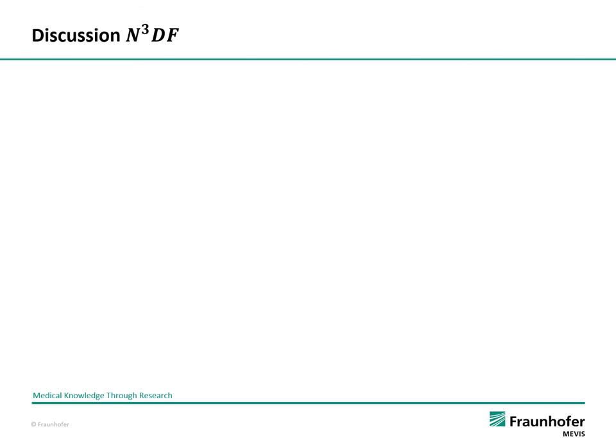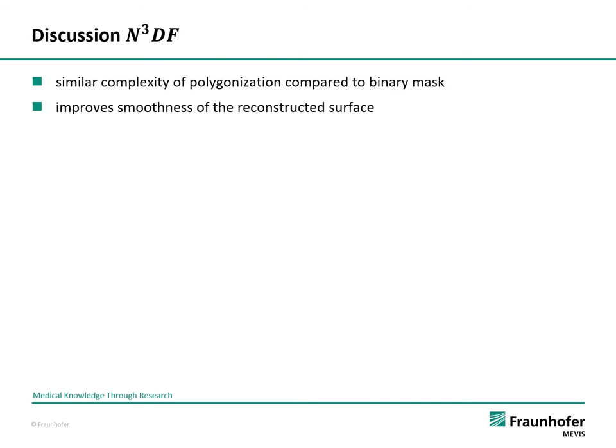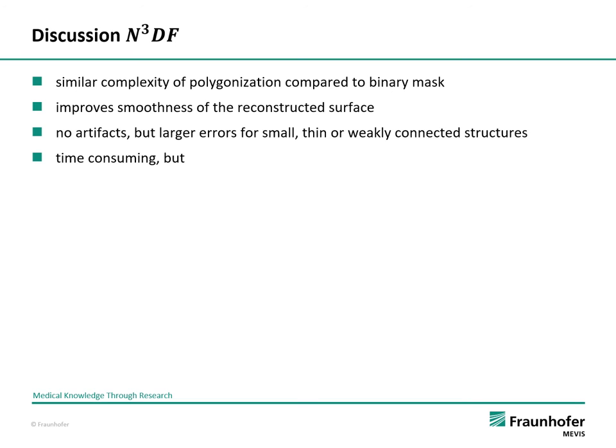The results of this work are as follows: the complexity of the reconstructed surface is similar to direct polygonization of the binary mask. With N3DF, the smoothness of the surface is improved and there are no artifacts, but there are larger errors for small, thin, or weakly connected structures. Calculating the N3DF is time consuming, but is only performed once and depends on the accessible hardware, as hardware has a big influence on calculation time.